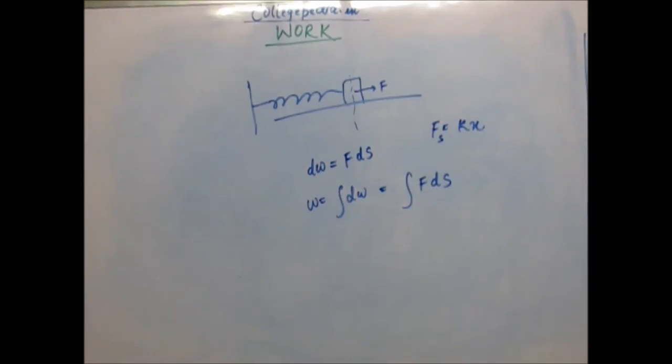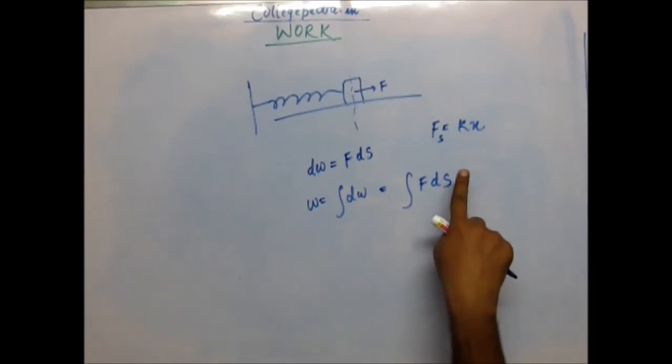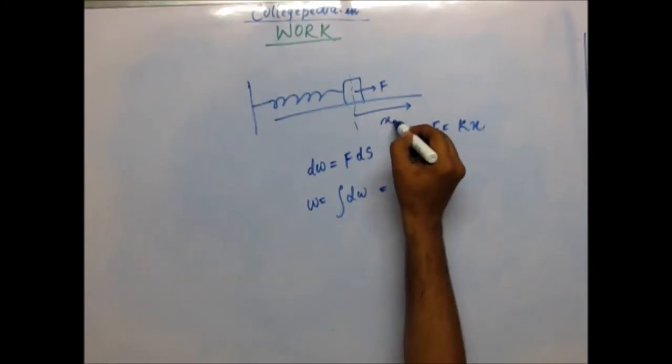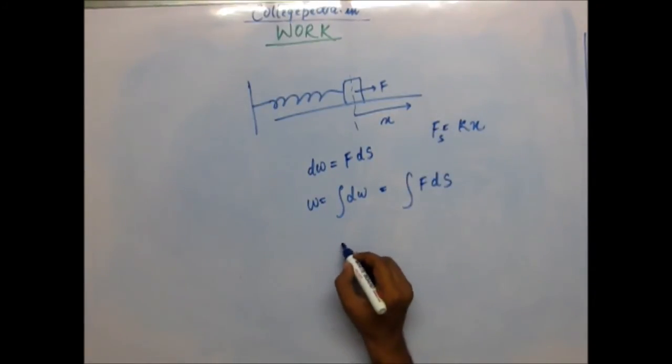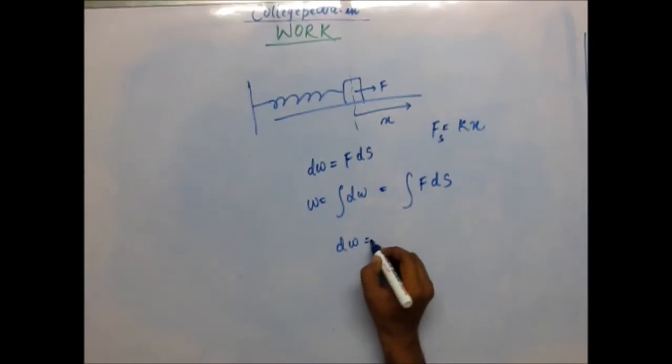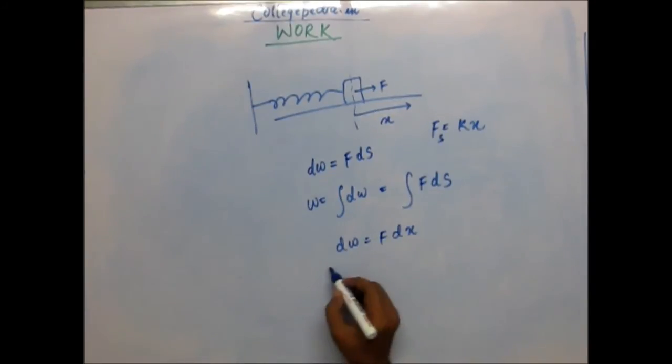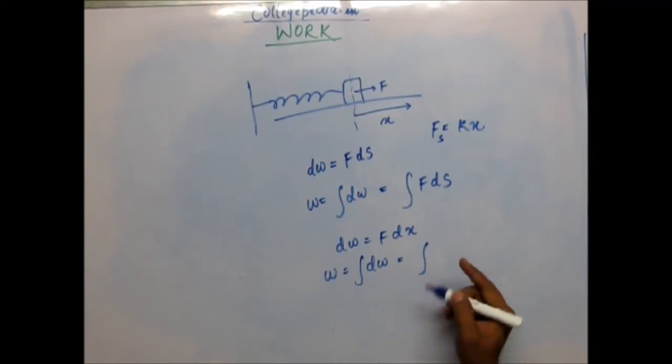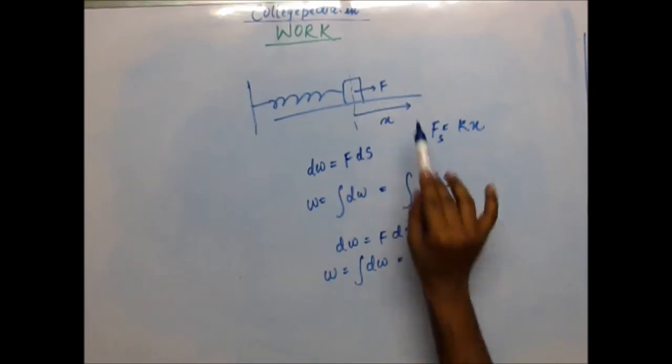In this case, at any displacement x, if the block has been displaced by amount x, then the small work will be F into ds. If we want to calculate the entire work, those small works should be summed up. The summation would be done by integration. Integration actually does the summation, so the integration would be F into ds.